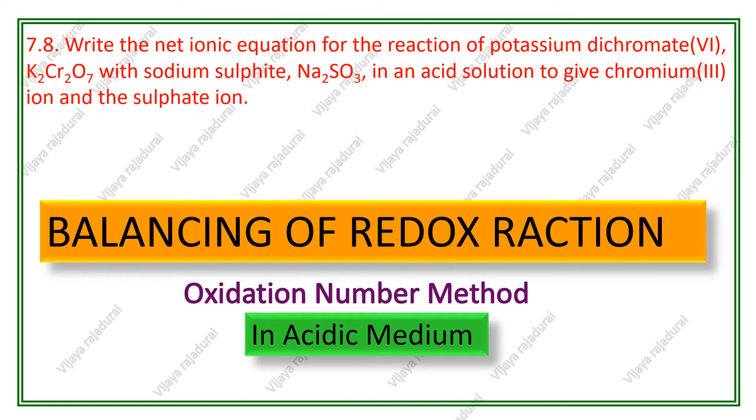Write the net ionic equation for the reaction of potassium dichromate with sodium sulfite in an acid solution to give chromium 3 ion and a sulfate ion. First, we will convert the given reactants and products molecules into chemical equation format.